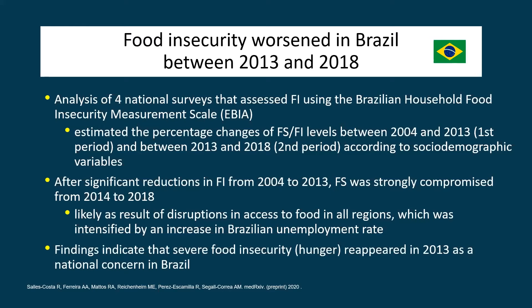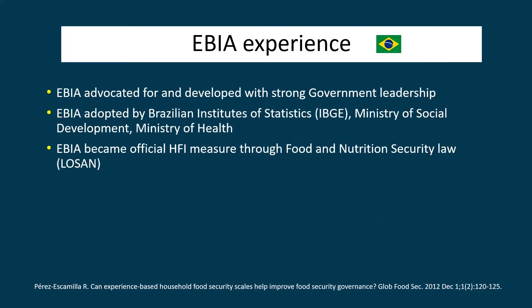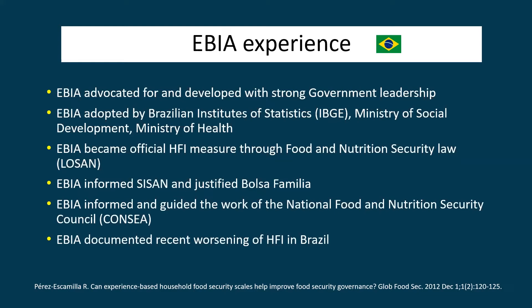Essentially, it left the leader of the country with no option but to recognize that during his time and as part of his policies, the severe food security situation in Brazil deteriorated after having improved for many years — and I'm referring now to President Bolsonaro. In summary: EVIA was advocated for and developed with strong government leadership; adopted by the Brazilian Institute of Statistics, the Ministry of Social Development, the Ministry of Health; it became the official household food insecurity measure through food and nutrition security law; it informed CISAN and justified Bolsa Familia; and it informed and guided the work of the National Food and Nutrition Security Councils, CONSEA. EVIA also documented recent worsening of household food insecurity in Brazil.